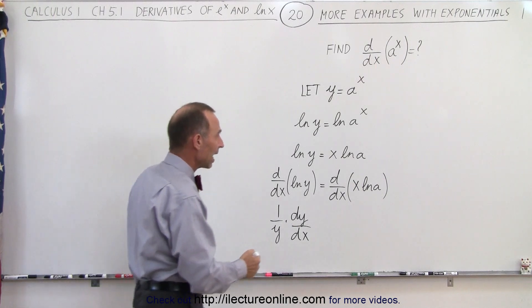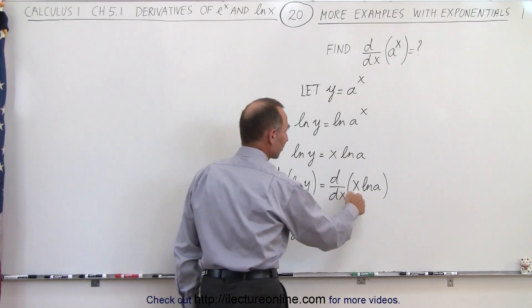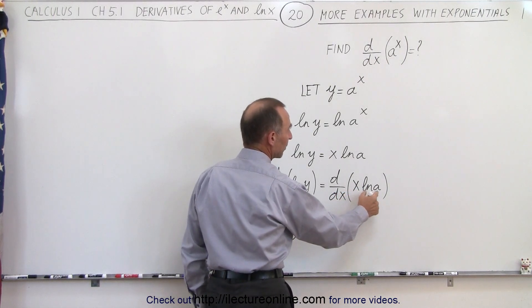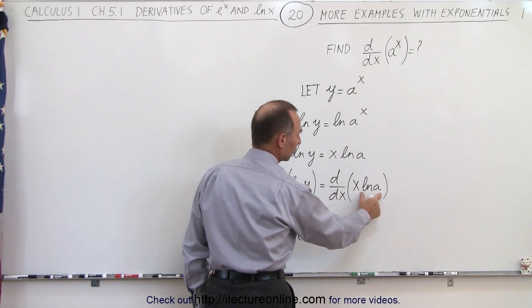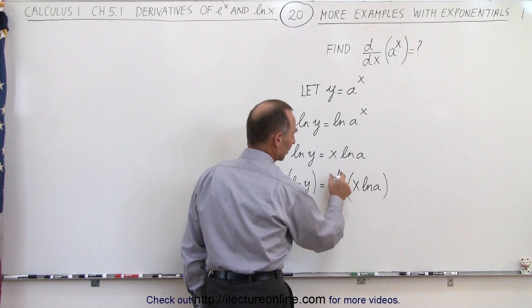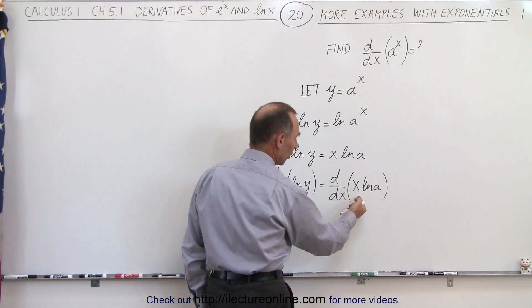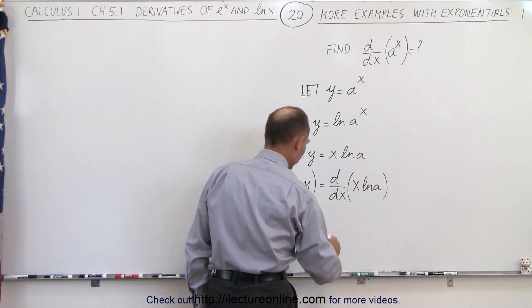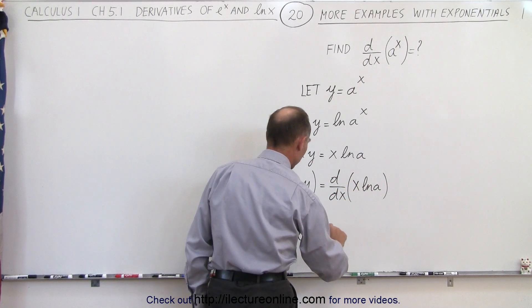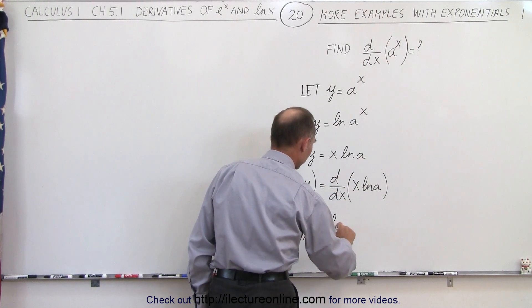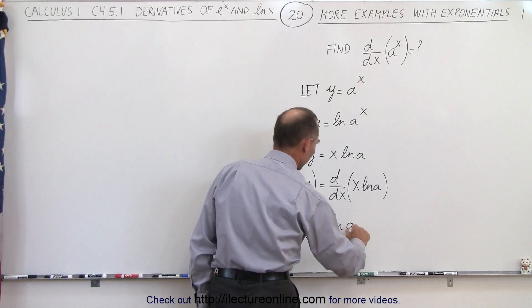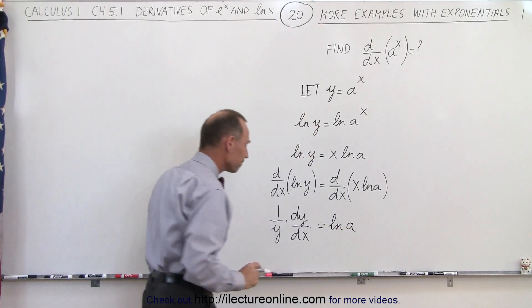On the right side, we have x times the natural log of a, but that's a constant, so simply the d/dx of x — which is 1 — times the constant, so this becomes times the natural log of a.